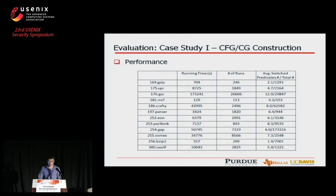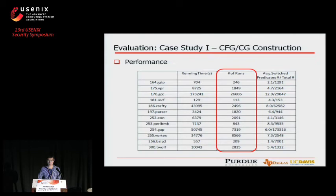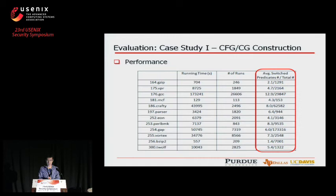This table shows the basic performance of X-Force. The second column shows running time in seconds — even for large programs, X-Force takes only a few hours. The third column is the number of paths explored. The last column is the average number of switched predicates out of total predicates. This number is extremely small, indicating that violation of path feasibility is fairly small.